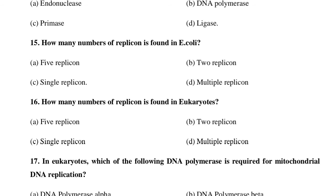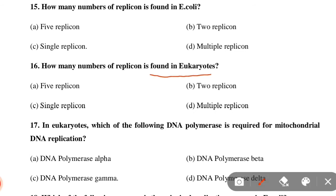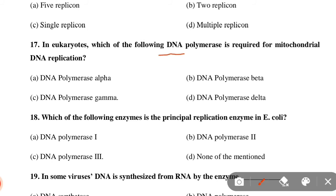Next MCQ: How many replicons are found in eukaryotes? Option A: 5 replicons, Option B: 2 replicons, Option C: Single replicon, Option D: Multiple replicons. Option D is correct — multiple replicons are found in eukaryotes.